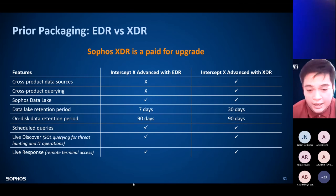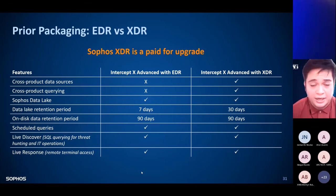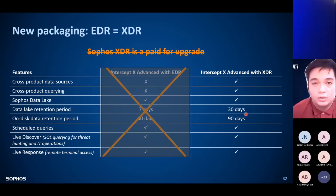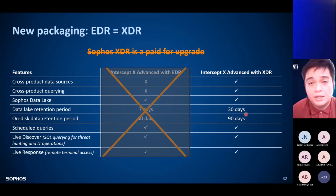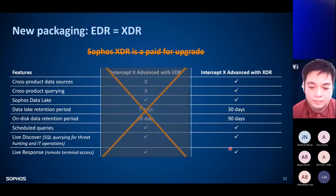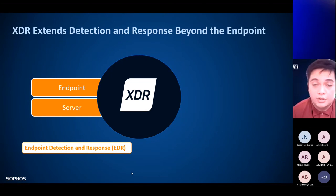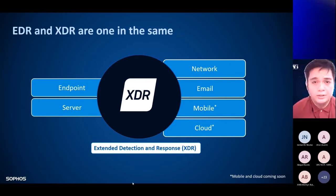The prior packaging is now simplified — we removed the middle EDR column. If a customer requires detection and response capabilities for endpoint security, it's now automatically offered as Intercept X Advanced plus XDR. XDR extends detection and response beyond the endpoint — previously SIXA EDR covered endpoint and server security, but now it extends to endpoint, server, network, email, mobile, and cloud datasets.